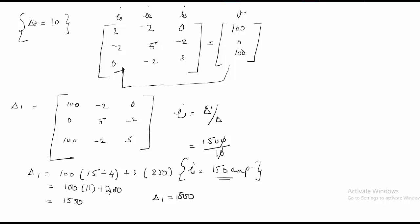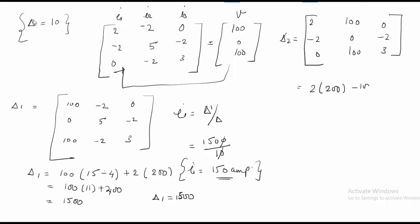For Δ2, replace the I2 column with [100; 0; 100], giving [2, 100, 0; −2, 0, −2; 0, 100, 3]. Computing: 2(0·3 − (−2)·100) − 100((−2)·3 − 0) + 0 = 2(200) − 100(−6) = 400 + 600 = 1000. So Δ2 = 1000, and I2 = Δ2 / Δ = 1000 / 10 = 100 amperes.